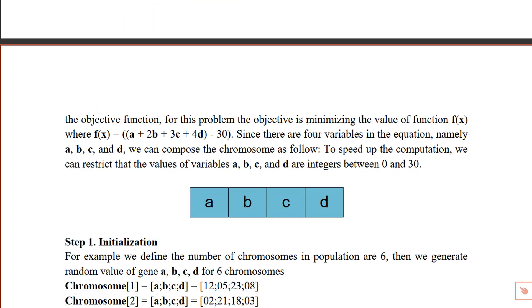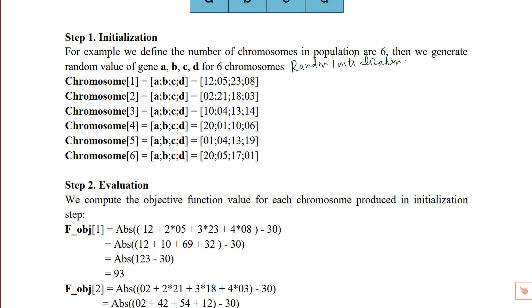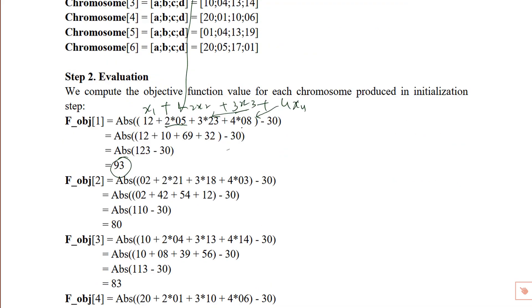So we need to minimize the absolute difference between a + 2b + 3c + 4d and 30. You call it x1 + 2x2 + 3x3 + 4x4 or a, b, c, d, whatever - it's the same. Okay, so we have four genes per chromosome and six chromosomes randomly initialized. First, then compute the fitness of each with the objective function. The fitness values or objective function values are calculated for all six chromosomes like these.